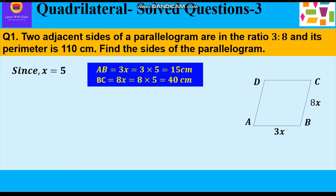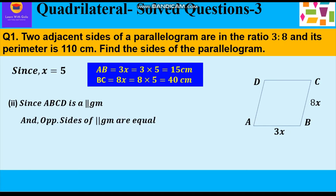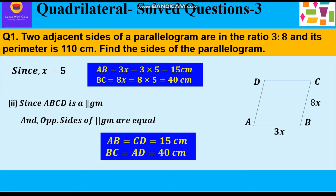Now since ABCD is a parallelogram and both pairs of opposite sides are equal, we can say AB = CD = 15 cm and BC = AD = 40 cm. So this is how we have found all the sides of the parallelogram.